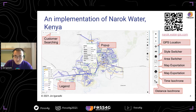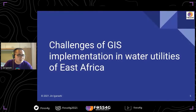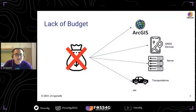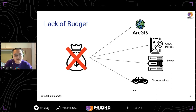Before going to talk about the software, I want to talk about general challenges of GIS implementation in water utilities of East Africa. First of all, they tend to have lack of budget, so they normally don't have budget to use ArcGIS, also GNSS devices. And for the system, this is very critical — they can't have a server, especially in small water utilities.